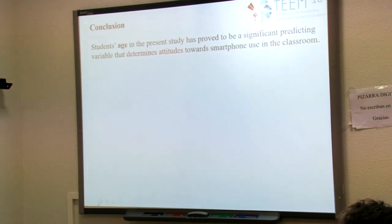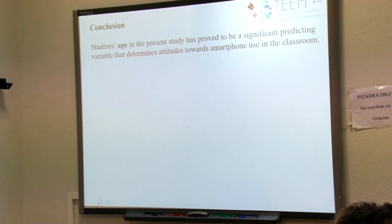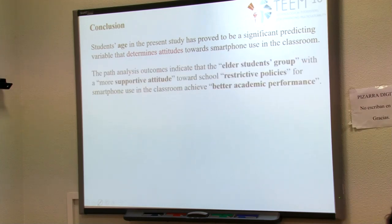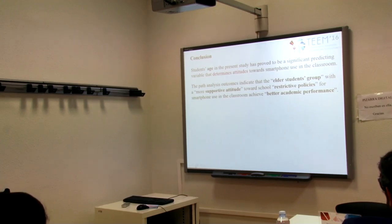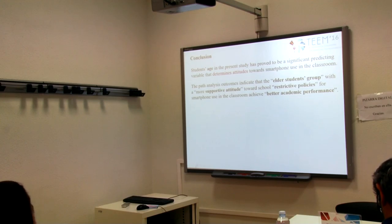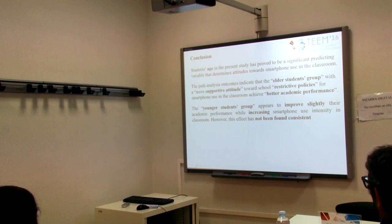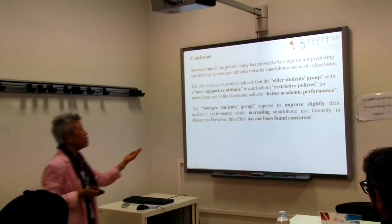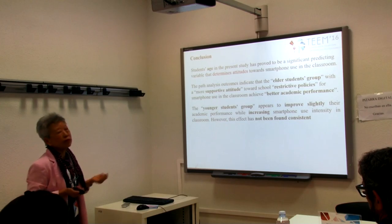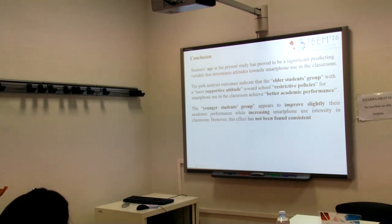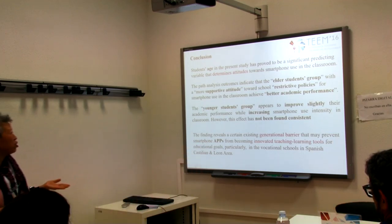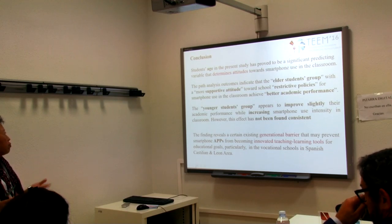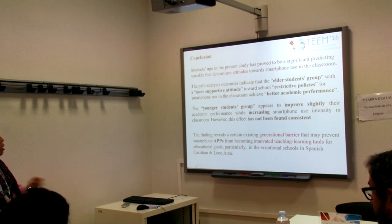We draw one conclusion: student age in the present study has proved to be a significant predicting variable that determines attitudes towards smartphone use in the classroom. The path analysis indicated that the elder students group, with a more supportive attitude towards school restrictive policy for smartphone use in the classroom, achieved better academic performance. The younger students group appeared to improve slightly their academic performance while increasing smartphone use intensity in the classroom; however, this effect does not prove to be significant or even consistent. The findings reveal a certain generational barrier that may prevent smartphone applications from becoming innovative teaching-learning tools for education goals, especially in vocational schools in the Spanish Castilla and León area.